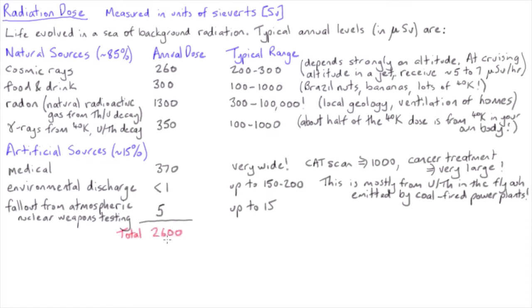On average, the total annual dose for radiation is of the order of 2600 microsieverts, but with a huge amount of natural variability.